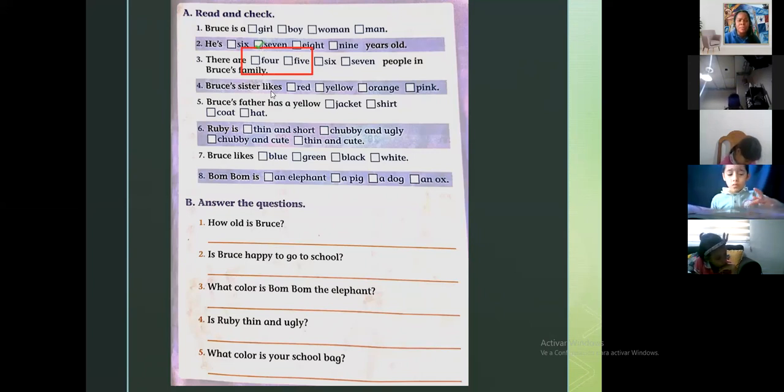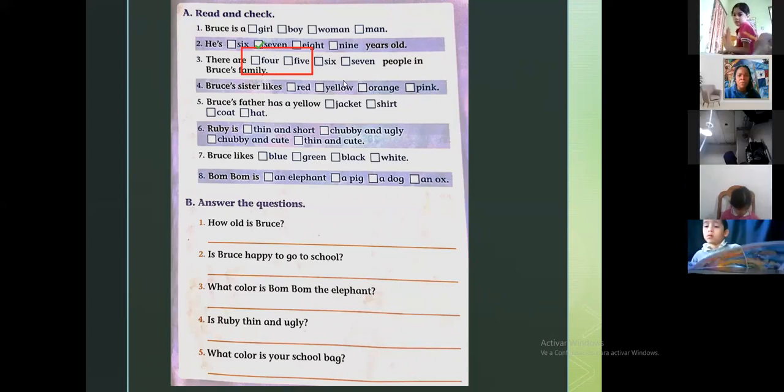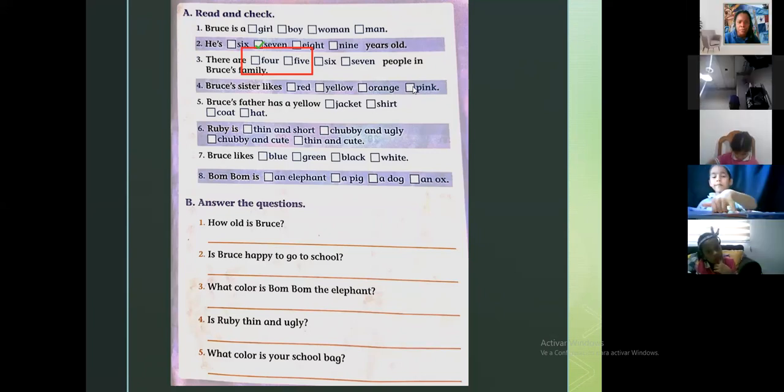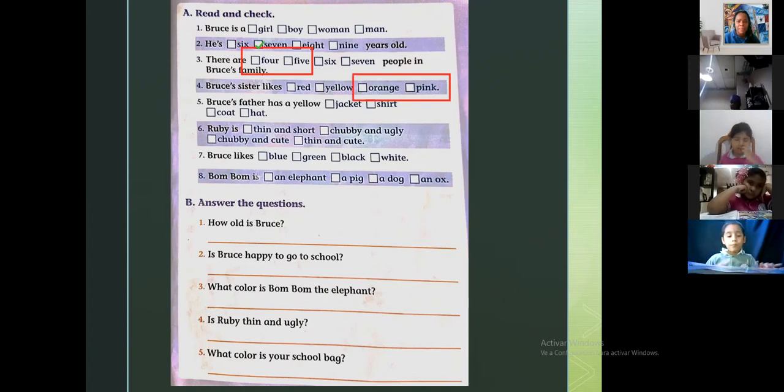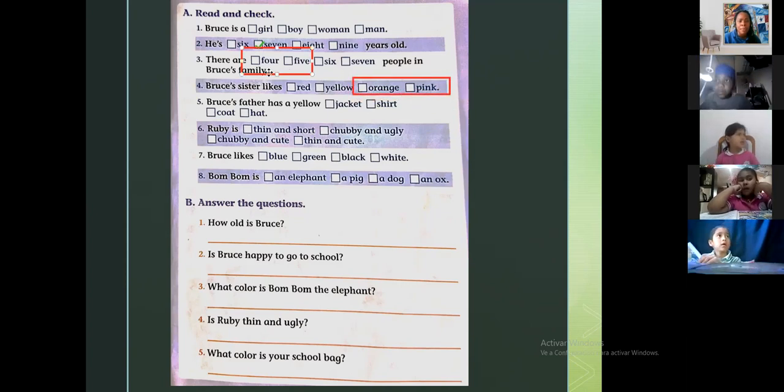Let's continue guys. Aquí va a ser Bruce's sister likes red, yellow, orange or pink. Repeat, Bruce's sister likes red, yellow, orange or pink. No pueden responder Viviana porque este es un ejercicio. Es un face personal. Tienen que escoger una de las cuatro. Le voy a dar dos para escoger, está entre orange y pink. Así que escojan una de esas dos, orange o pink. Piense bien lo que usted leyó y si no busque la historia y léala nuevamente con su mamá o pida ayuda a un adulto.